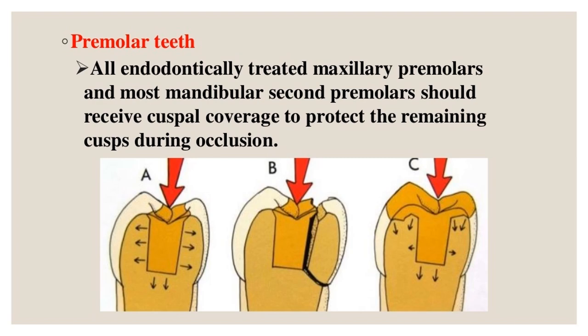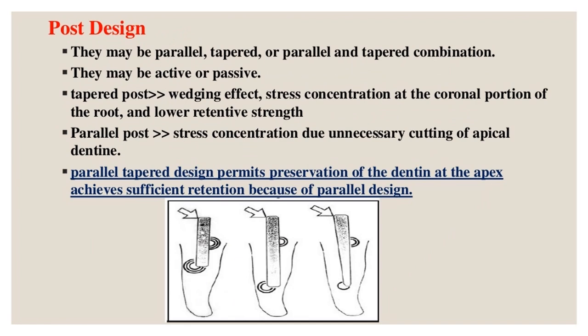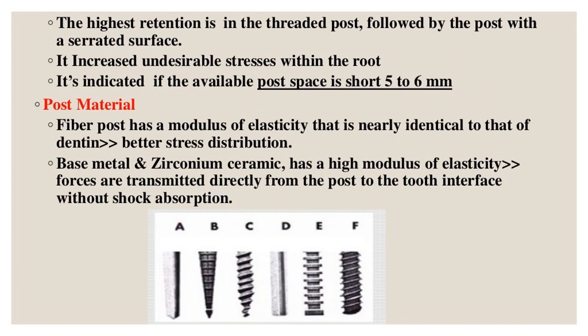Post design: posts may be parallel, tapered, or a parallel-tapered combination; they may be active or passive. Tapered posts have a wedging effect causing stress concentration at the coronal portion of the root and lower retentive strength. Parallel posts cause stress concentration due to unnecessary cutting of apical dentine. The parallel-tapered design permits preservation of dentin at the apex while achieving sufficient retention. Highest retention is in the threaded post followed by the post with a serrated surface, though these increase undesirable stresses; they are indicated when available post space is short (5–6 millimeters).